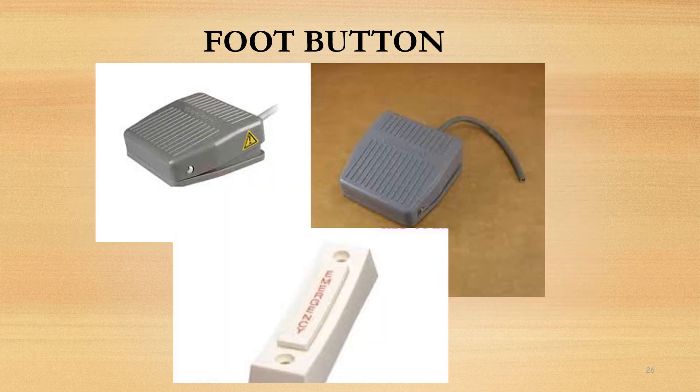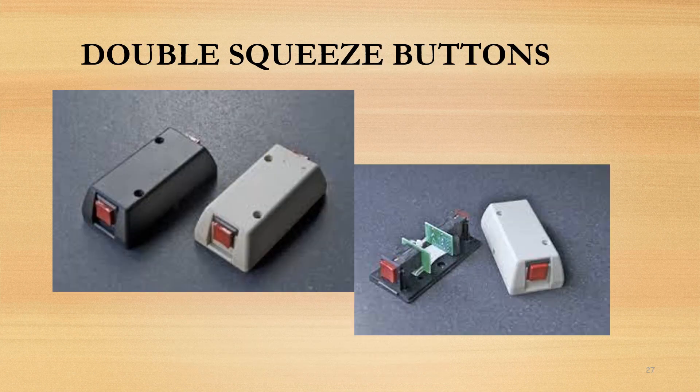Foot button — permits alarm activation safely while both hands remain clear and in view of the robber. Double squeeze buttons — pressure is required on both sides of the device, and therefore the probability of accidental alarm is reduced.